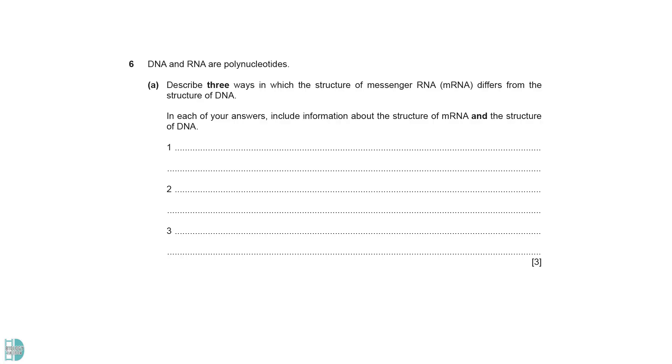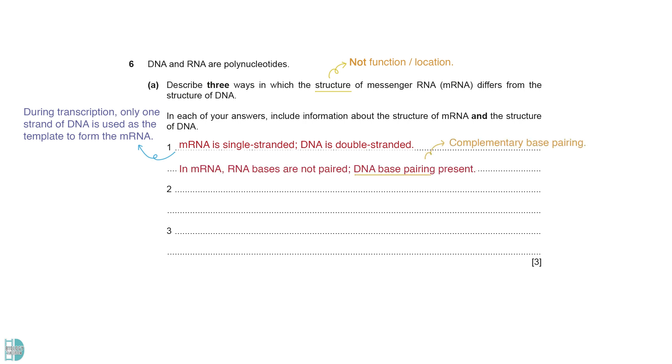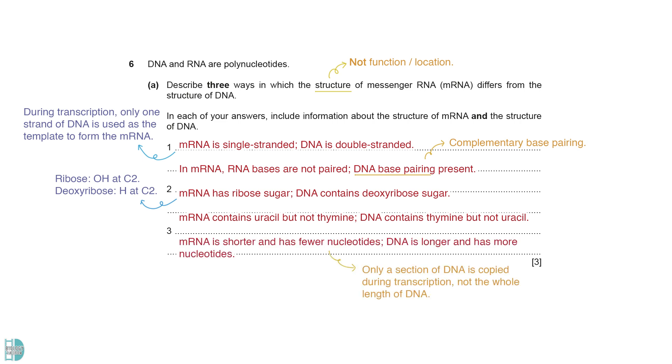Describe three ways in which the structure of mRNA differs from the structure of DNA. Note that you can only compare the structures, not their functions and locations. mRNA is single-stranded while DNA is double-stranded. During transcription, only one strand of DNA is used as the template to form the mRNA. Complementary base pairing is only present in DNA as mRNA has only one strand. The pentose sugar in mRNA is a ribose sugar, while DNA contains deoxyribose sugar. Ribose has a hydroxyl group at carbon 2, whereas deoxyribose has a hydrogen atom. mRNA contains uracil but not thymine. DNA contains thymine but not uracil. mRNA is shorter and has fewer nucleotides. Only a section of DNA is copied during transcription. Cells do not synthesize an mRNA molecule from the whole length of DNA.